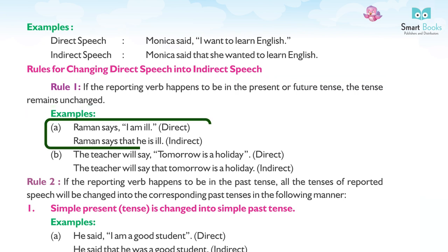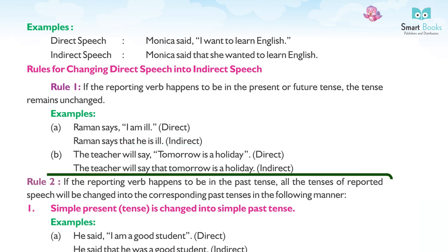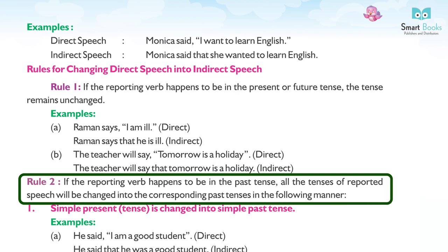Examples for Rule 1: (a) Raman says, 'I am ill.' (Direct) → Raman says that he is ill. (Indirect) (b) The teacher will say, 'Tomorrow is a holiday.' (Direct) → The teacher will say that tomorrow is a holiday. (Indirect)